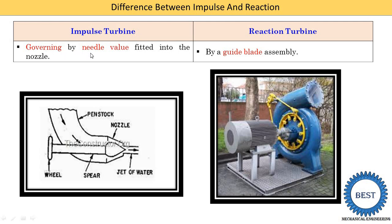Impulse turbine governing is done by using a needle or spear fitted inside the nozzle. By using this we change the quantity of water supplied to the turbine. In reaction turbines, governing is done by changing the angle of the guide blades using the guide blade assembly. In a reaction turbine there is a guide wheel and then runners — the yellow portion is connected with the guide wheel and is used to change the angle of the guide blade. By changing the guide blade angle, the quantity of water is changed using this lever mechanism.